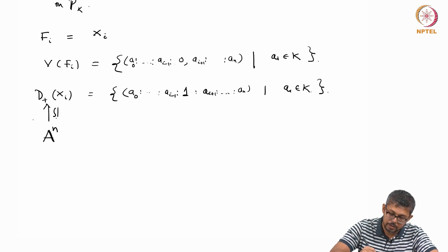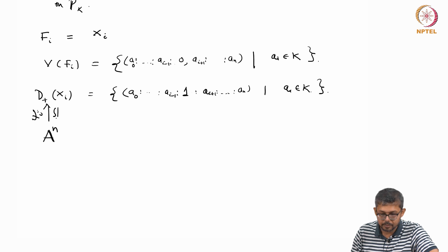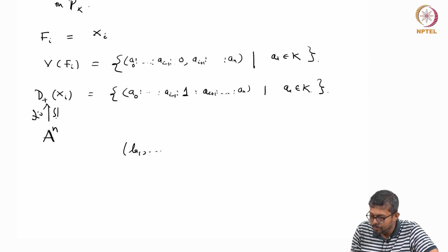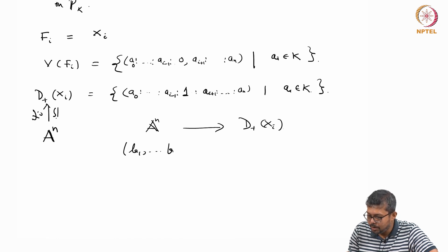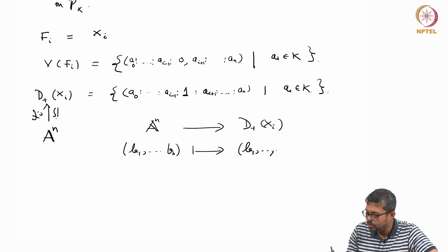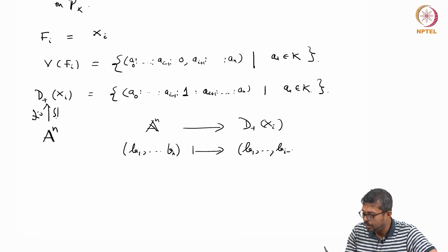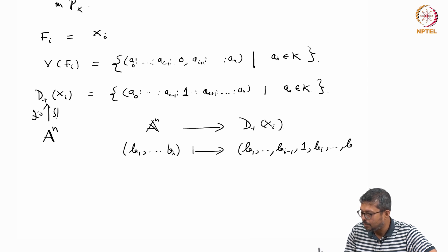You see that D+(x_i) and the affine space A^n — there is a bijection. I call this map psi_i. What is the bijection? I take any element (b_1, b_2, ..., b_n) in A^n and send it to [b_1, b_2, ..., b_{i-1}, 1, b_i, ..., b_n] in D+(x_i).